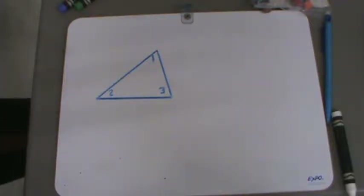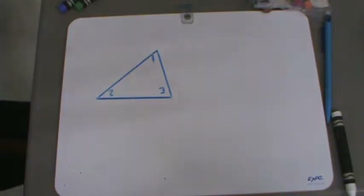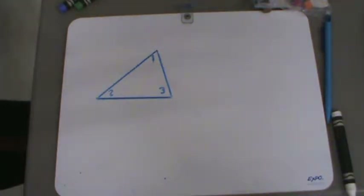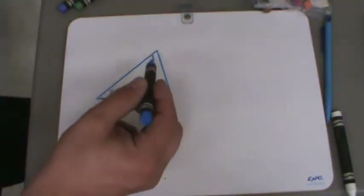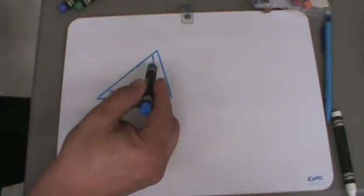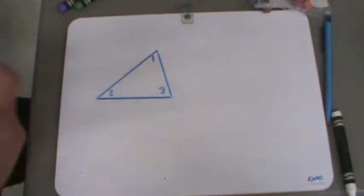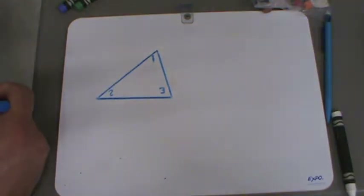The objective of this video is to learn about exterior angles and remote interior angles. Here we have a triangle, and we have the angles inside labeled 1, 2, and 3.